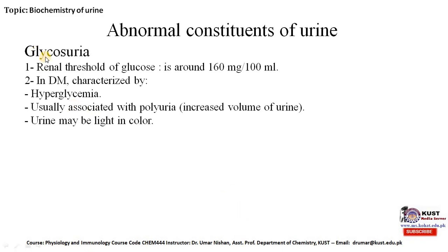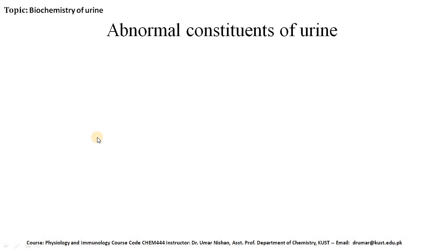Another situation is glycosuria. The renal threshold of glucose is around 160 mg per 100 ml. In diabetes mellitus, characterized by hyperglycemia — high level of glucose — it is usually associated with polyuria, which means increased volume of urine. Urine may be light in color.